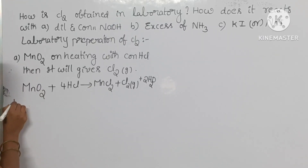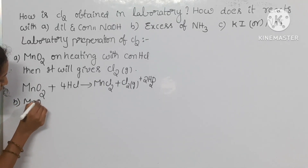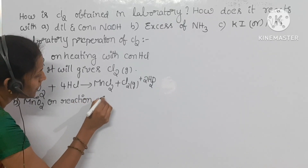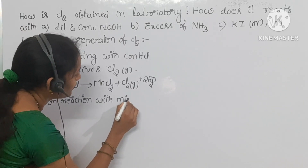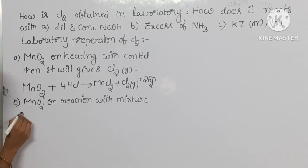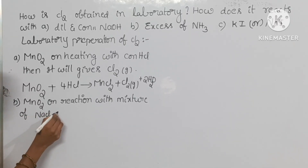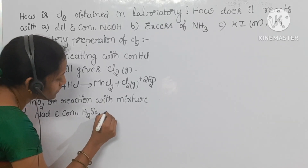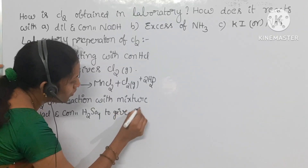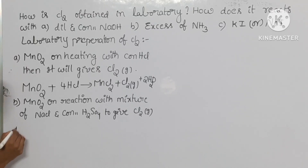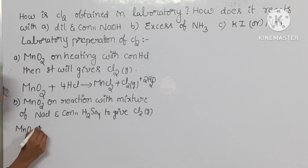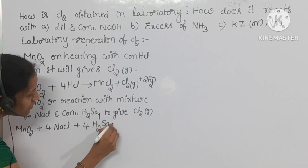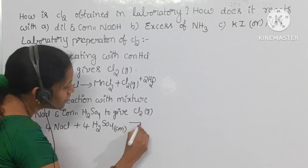The second preparation method: the same manganese dioxide, MnO2, on reaction with a mixture of NaCl and concentrated sulfuric acid, H2SO4. Don't be confused here — concentrated H2SO4 will give chlorine gas, Cl2.